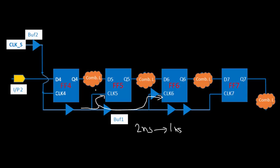These are the options when fixing the hold violation. Similarly, if you have to fix the setup violation, instead of decreasing the skew you increase it — either by removing a buffer on clock 5 or adding buffers to clock 6. So now you know how to fix hold and setup violations. The next question is: what are the implications of this particular method? Let's take them one by one.